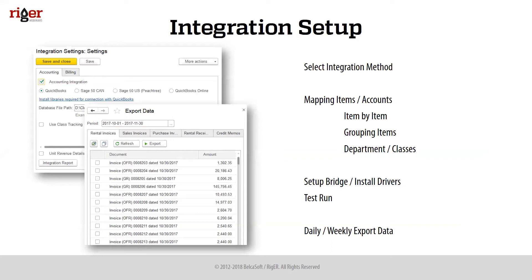Here is how the integration setup looks in Rigger. We select the integration method, because for some applications we have different methods depending on the technical requirements and limitations. After that, we map items and accounts — it could be item by item, for example an item in Rigger mapped to an item in QuickBooks. It can be one-to-one or one-to-many, where one item in QuickBooks connects to many items in Rigger. Then we set up departments and classes to understand the analytics of transactions, separated in every invoice or even every line.